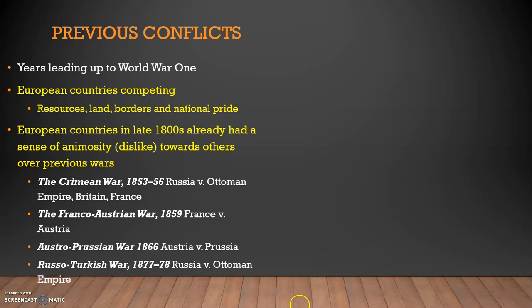In the 18th century especially, you had the Russians fighting the Ottoman Empire. The Ottoman Empire, for those who don't know, is based out of what is modern-day Turkey and was, at one point, one of the biggest empires in human history. The Russians fought against the Ottomans, who were sided with Britain and France. The Franco-Austrian War means France fought Austria. The Austro-Prussian War — Austria fought Prussia. And then the Russo-Turkish War: Russia fights the Ottomans again in 1877 to 1878. But those are not super important wars.